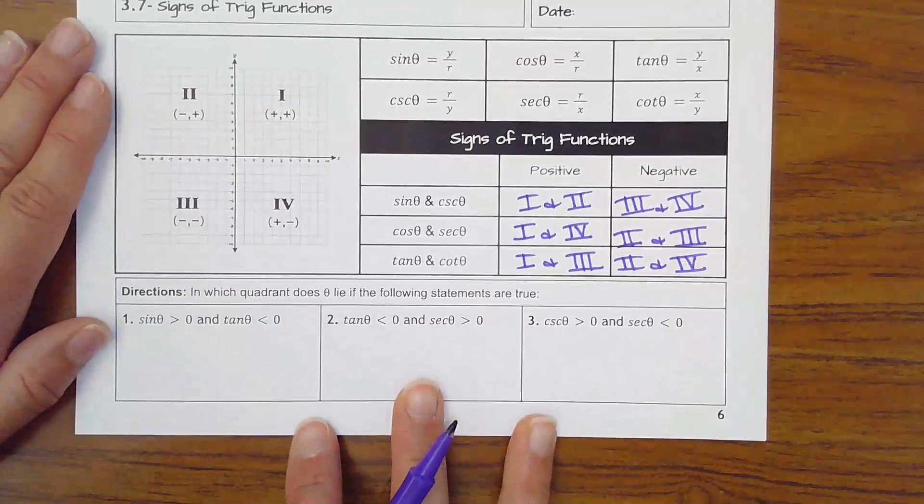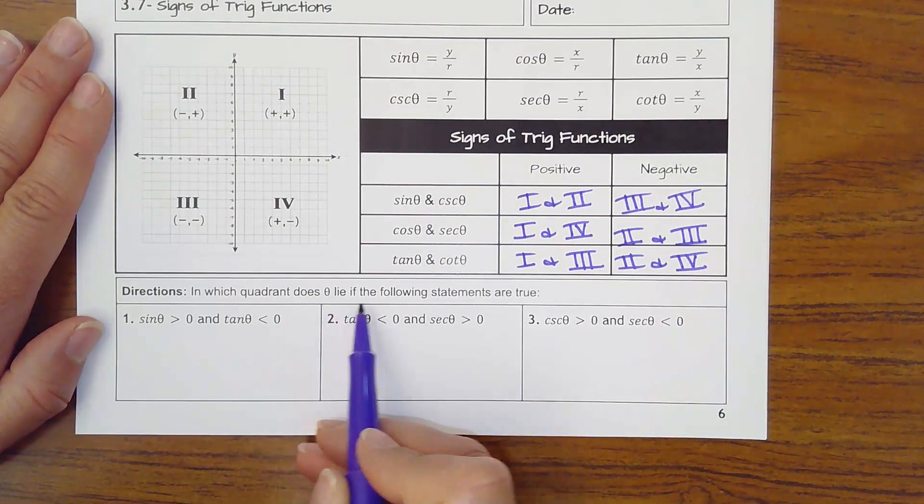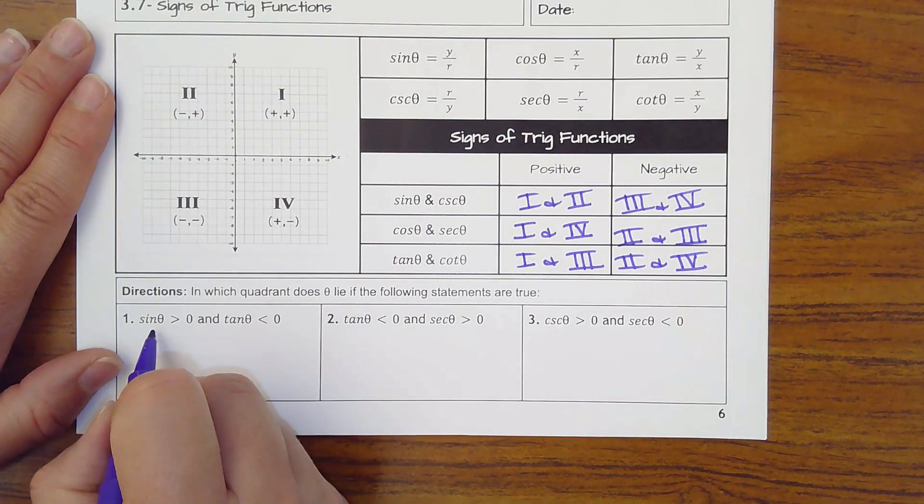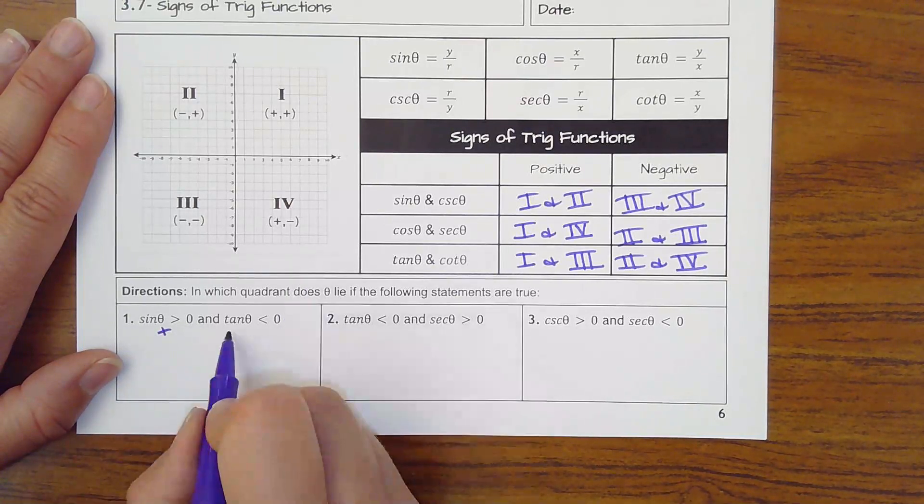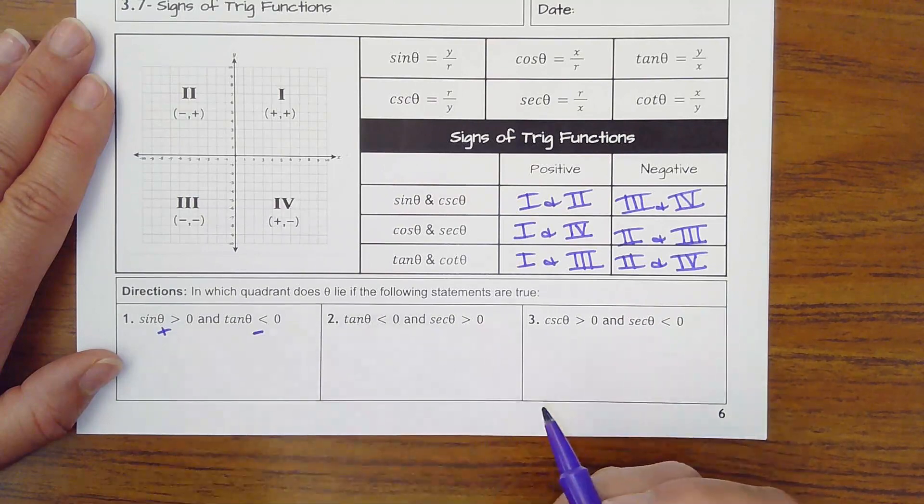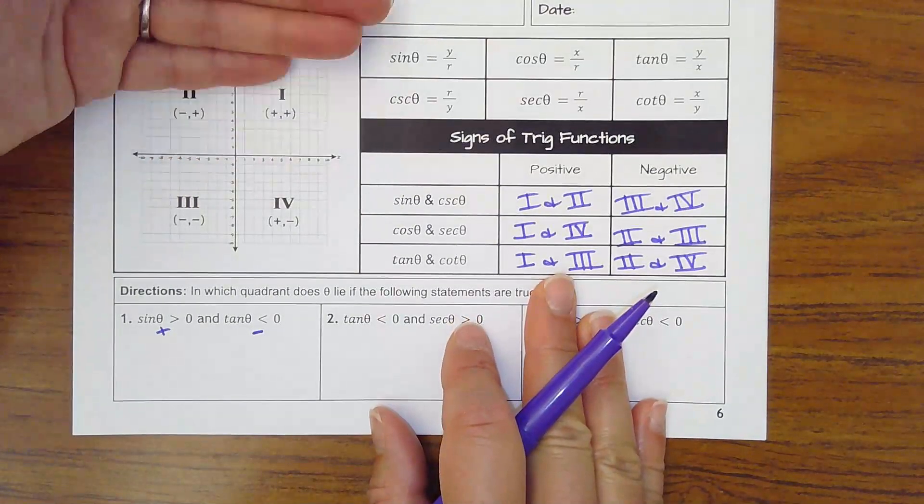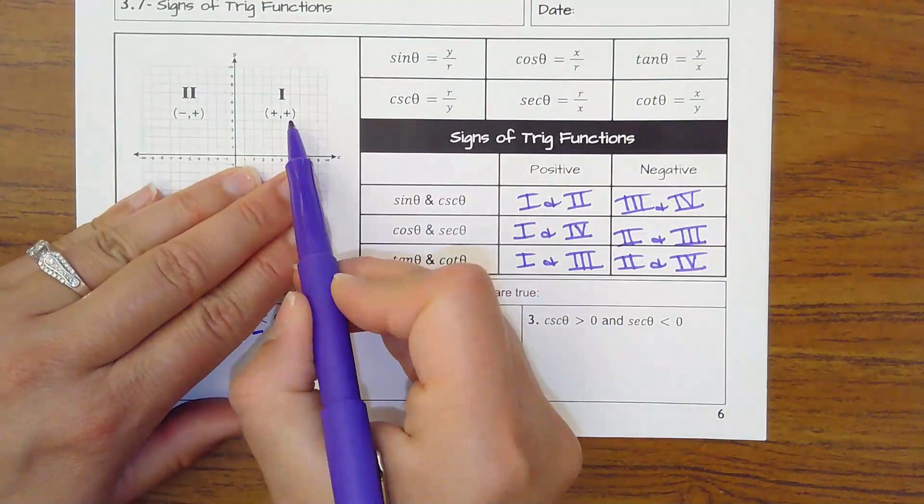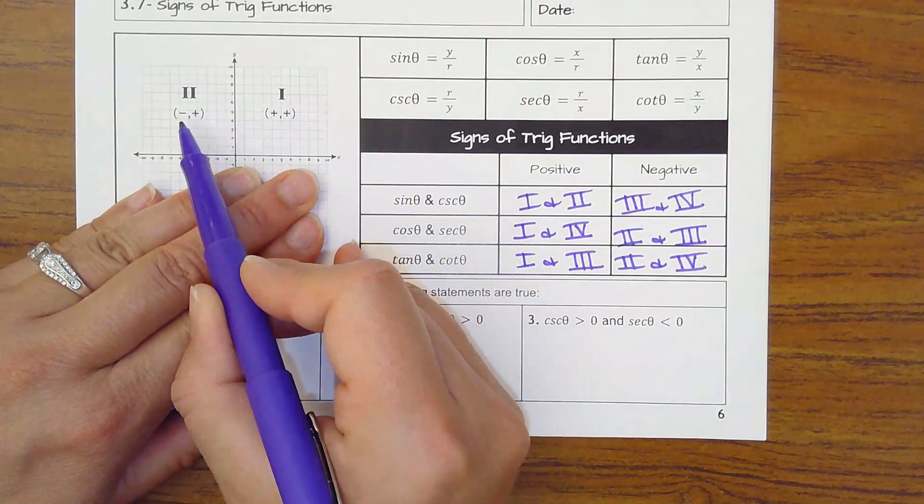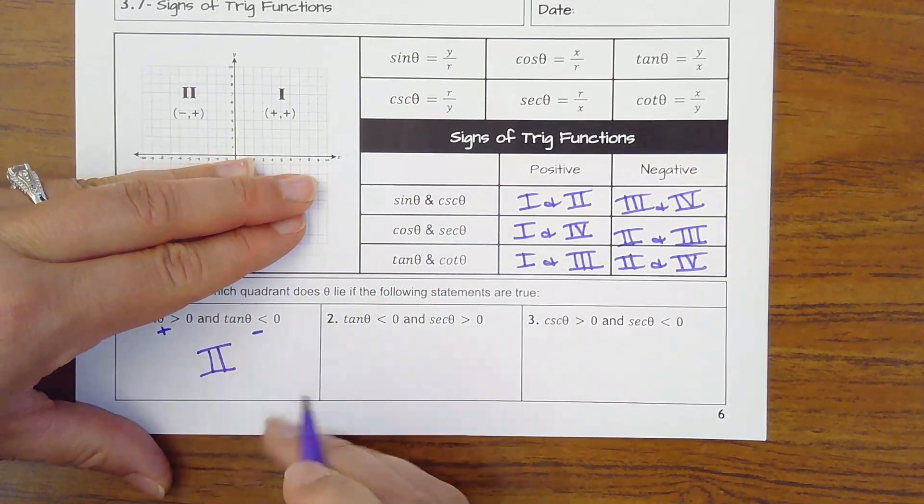So now what's going to ask you is in which quadrant does this angle lie if the following statements are true? Where is sine of theta greater than 0? So that means where is sine positive and tangent less than 0, negative? So I think about this. Where is sine positive? Where y's are positive? So that could be quadrant 1 or 2. Where is tangent negative between those two quadrants? This is positive. Tangent's only negative here in quadrant 2 out of those two options.